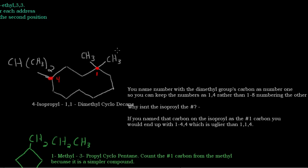So you might be wondering, why isn't the isopropyl number 1? Why don't you name this as number 1? Well if you name that carbon on the isopropyl as number 1, you would end up with 1,4,4, because then this one would be your 4, and you want the 1,1,4 rather than the 1,4,4. So that's just keeping the numbers in each address as the lowest possible number.